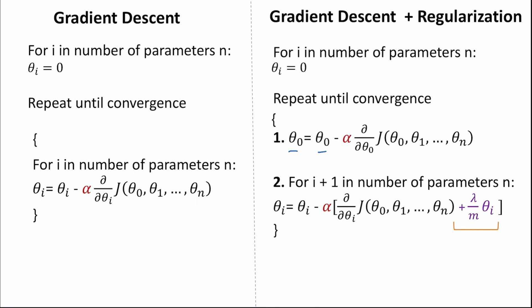With ordinary gradient descent we subtract each parameter by alpha times the partial derivative of the cost function. With regularization we additionally subtract alpha times lambda over m times theta i, making a further reduction to each parameter. Both alpha and lambda are hyperparameters — parameters we pick ourselves to control the learning process. A higher value of lambda will reduce each theta i more, further decreasing the variance of our model. m represents the total number of training examples.